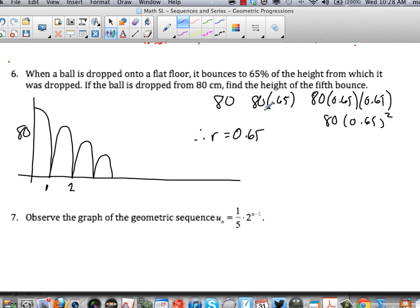Again, the second term represents the height of the first bounce. The third term represents the height of the second bounce. So the term number is always one more than the bounce number. So if I want a bounce number of 5, then I want a term number of 6.